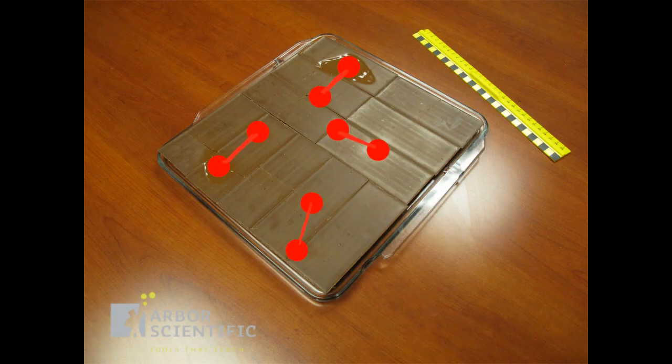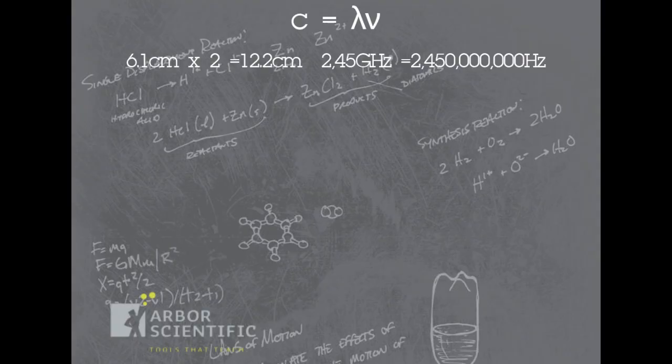As we mentioned, this is only half of the wavelength, so we'll double it during the calculation. And finally, we can calculate the speed of light, which equals the wavelength times the frequency. Our microwave's frequency is 2.45 GHz, which comes out to 2,450,000,000 Hz.